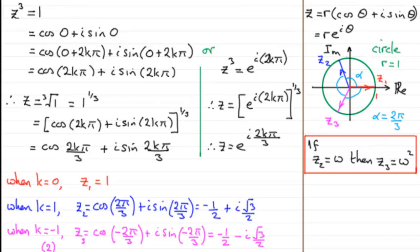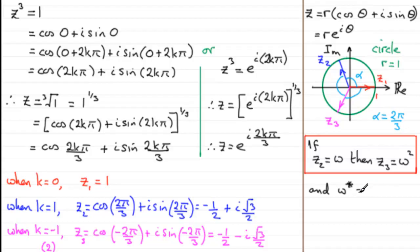Another result: z3 is the complex conjugate of z2. So the roots occur in a complex conjugate pair. Since z2 equals ω, the complex conjugate of ω equals ω squared in this example.